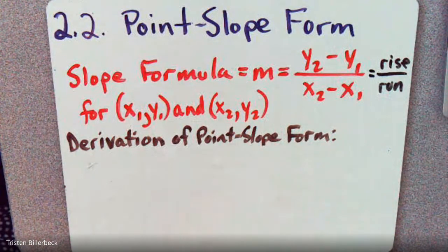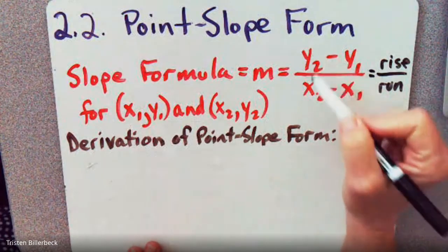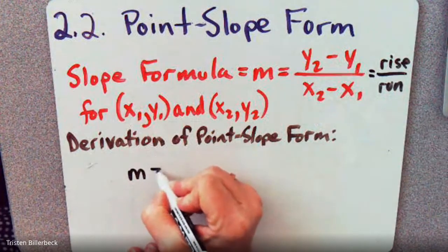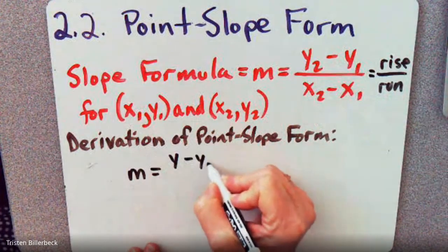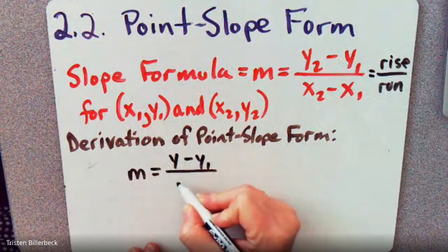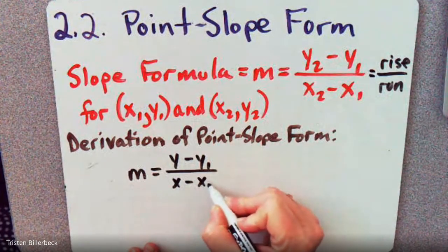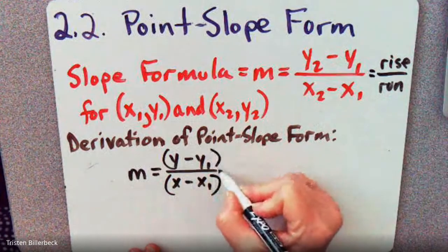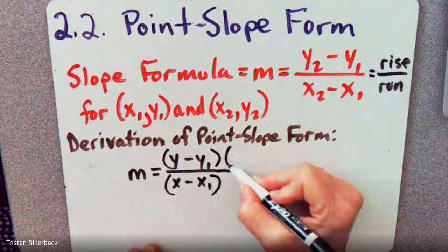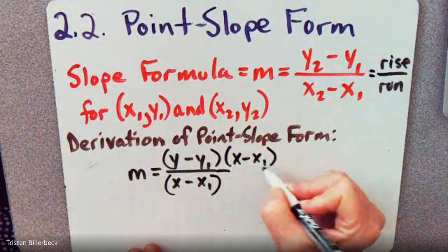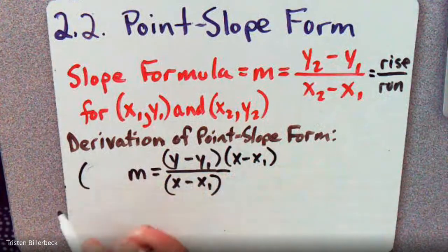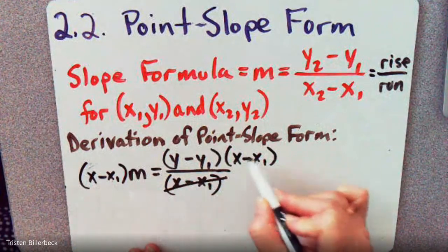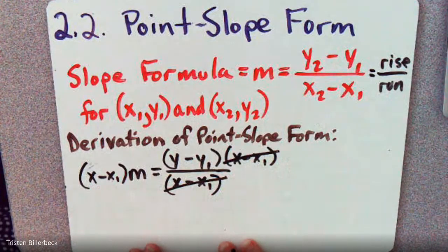So let's say we didn't know point 2. Let's say we have the slope is Y minus Y1 over X minus X1. So in order to simplify this in terms of the Y values, what we would do is just multiply this side by the denominator and this side by the denominator.